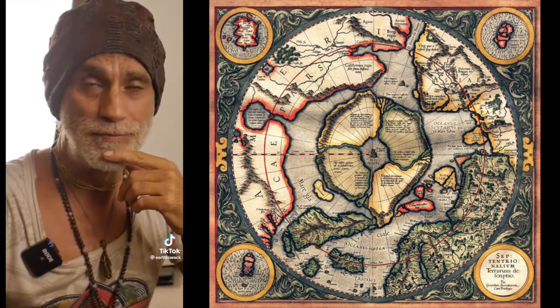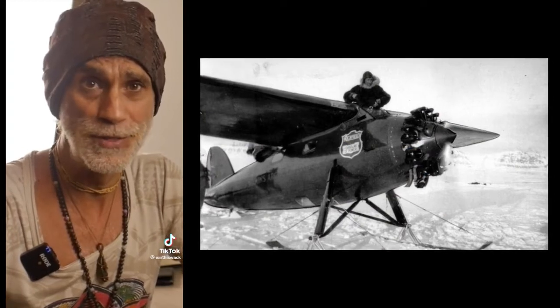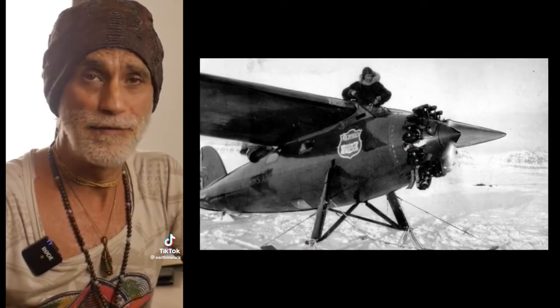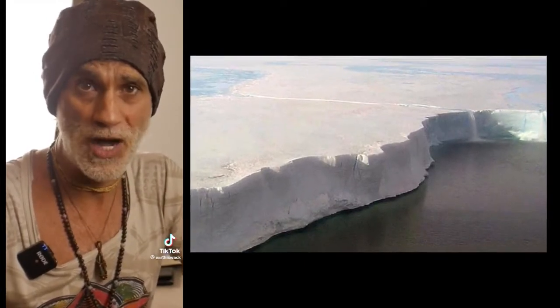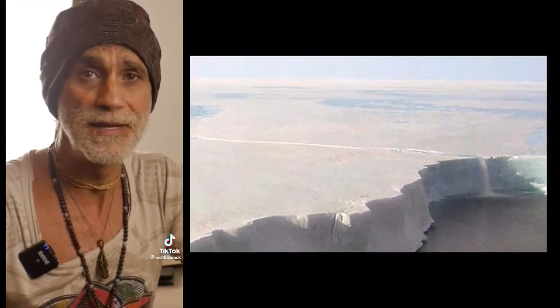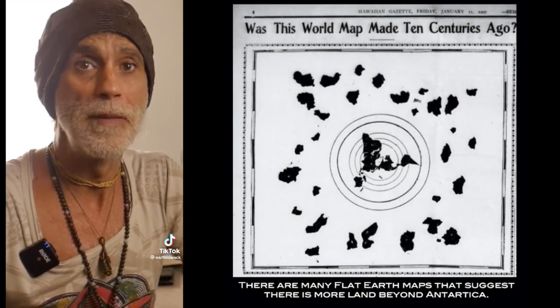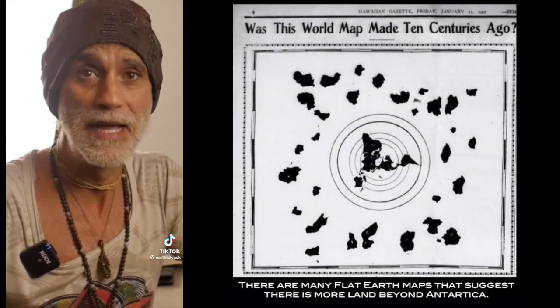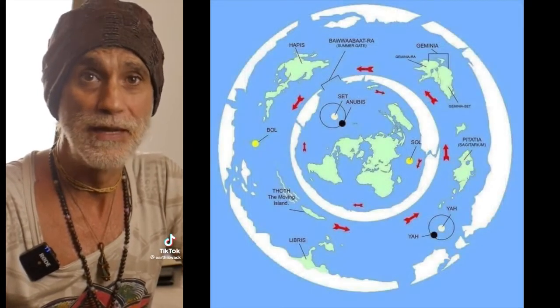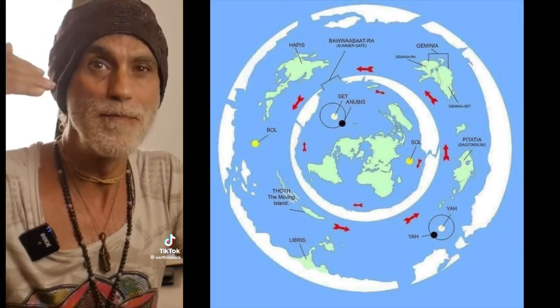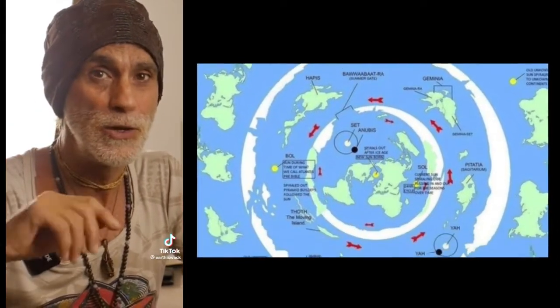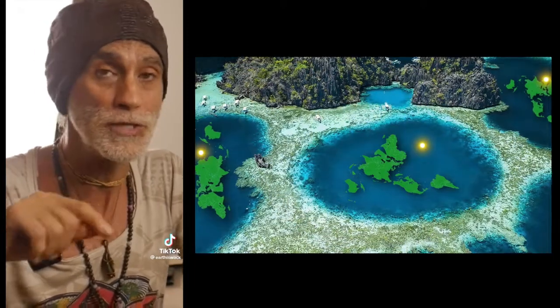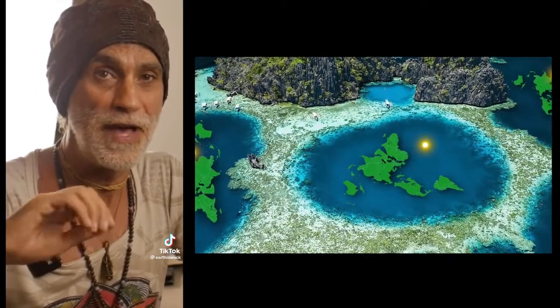I'll give you one example. Sir Captain George Hubert Wilkins, a contemporary of Admiral Byrd, he flew beyond Antarctica 5,000 miles according to his records, and he said that he found there many, many lands and peoples 5,000 miles beyond Antarctica. That's just one example of an explorer who has found lands that are not at all on any of our maps.